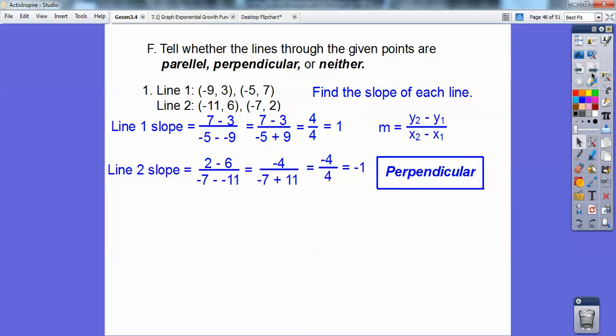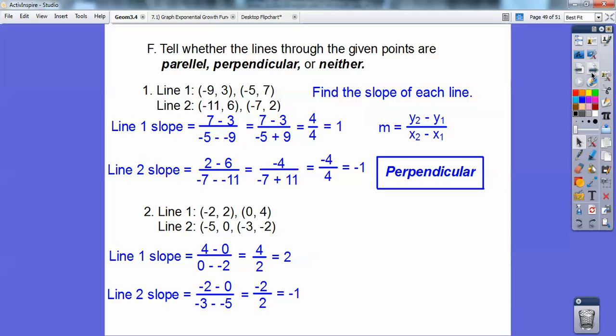Let's try another one. Number 2, same thing. I'm going to find the slope. There's the slope of line 1, there's the slope of line 2. And those ones are neither. They're neither parallel or perpendicular.